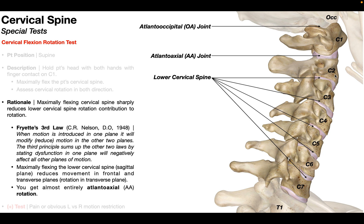If we look at the joints involving cervical vertebrae below C2, these would all be joints of the lower cervical spine — for example, the joints between C2 and C3, between C3 and C4, all the way down to between C6 and C7.